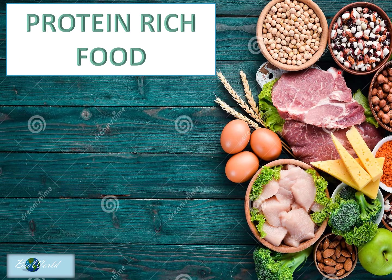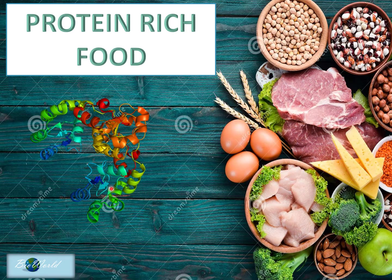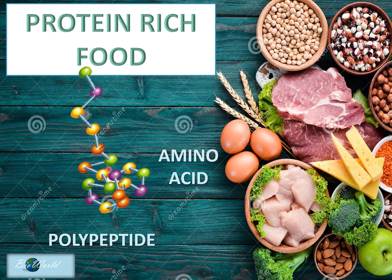Hi there! Feeling hungry? We eat these foods because they taste good but also because they provide us with protein. Proteins are made up of polypeptides and polypeptides are made up of strings of amino acids. Now why are these amino acids colored differently? Is it to make the picture more colorful or is there a more serious reason? Welcome to BioWorld where I'm going to help solve this question.